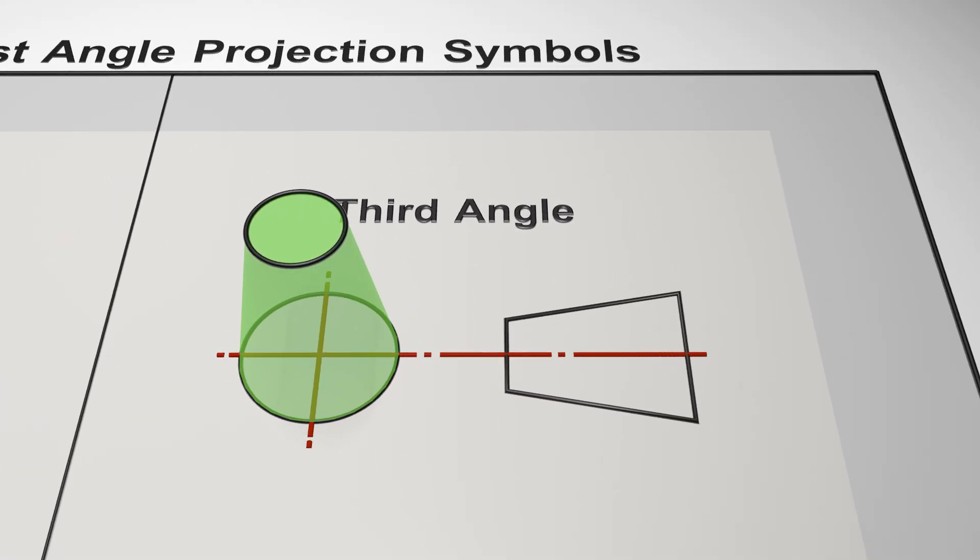And then remember, in third angle, it's about pulling the nearest orthographic face out in the direction of the view you're creating, resulting in the symbol.